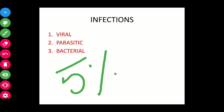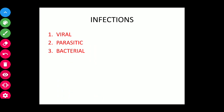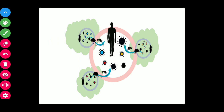Infections account for about five percent of miscarriages. These include viral infections such as rubella, cytomegalovirus, and HIV; parasitic infections like toxoplasma and malaria; and bacterial infections such as Ureaplasma, Chlamydia, Brucella, and Spirochetes. There are fewer chances of abortion before the 28th week due to the effective thickness of the placental barrier.